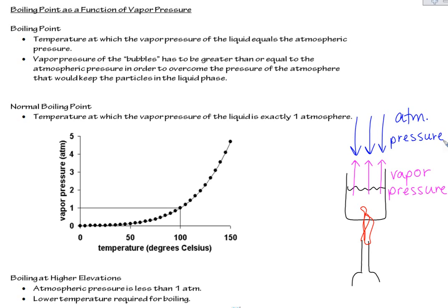So that's kind of this new definition of boiling point. The temperature at which the vapor pressure of the liquid at least equals the atmospheric pressure. And we know that as we increase the temperature, we increase the vapor pressure of the liquid. And that kind of explains here that this vapor pressure of the bubbles, the gas coming from within the liquid, has to be greater than or equal to the atmospheric pressure in order to overcome that downward pressure of the atmosphere that would tend to keep the particles in the liquid phase.